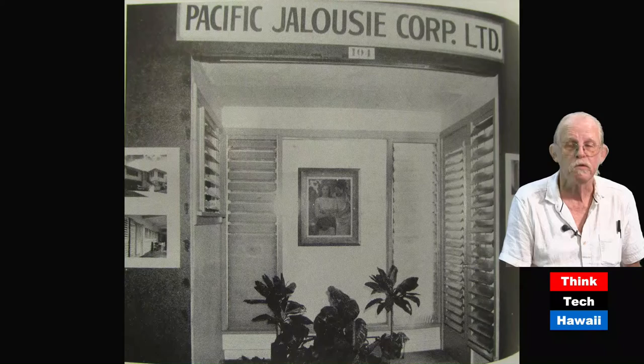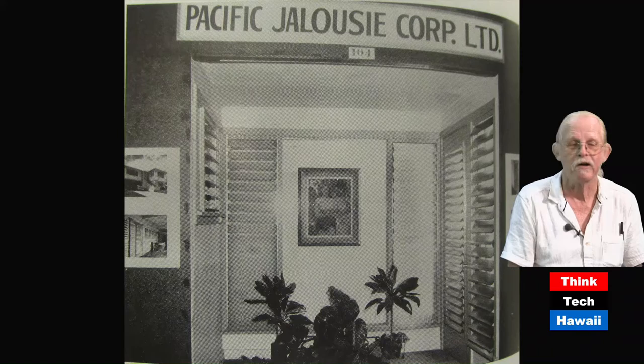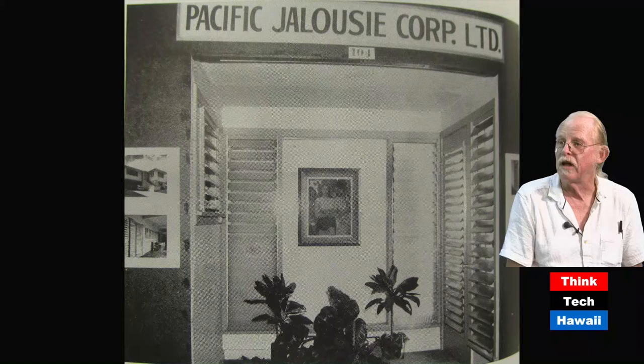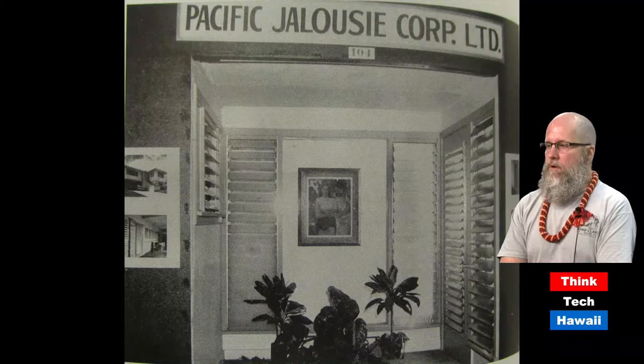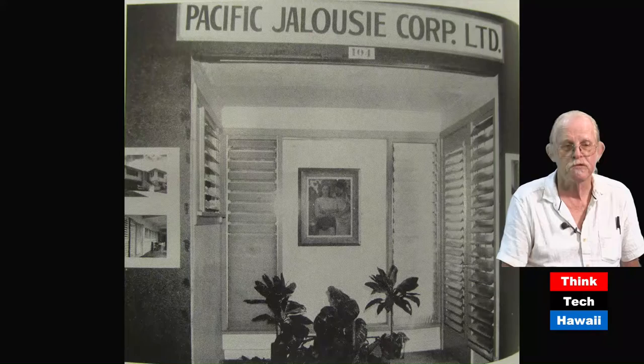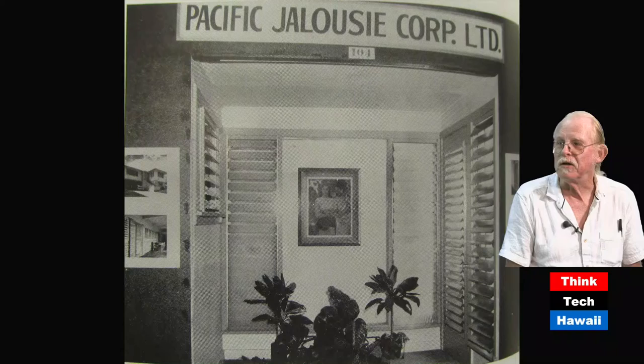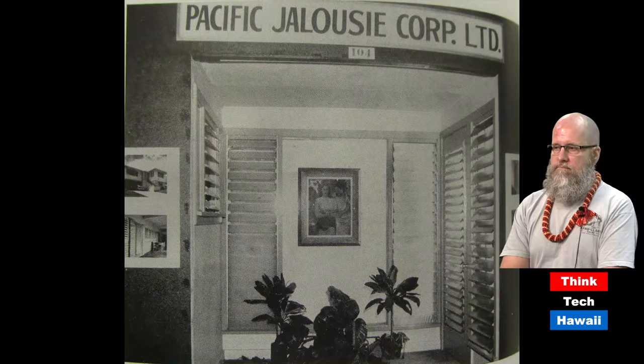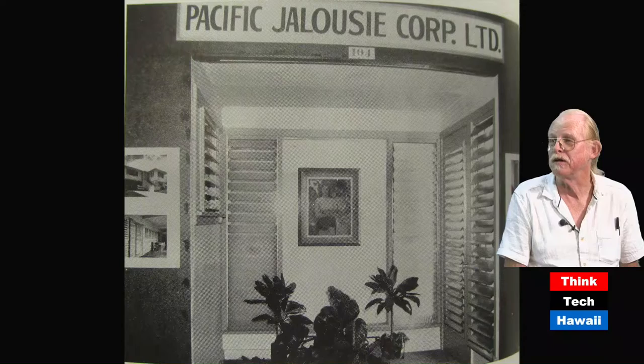Ho would put them in his house in Kaneohe — which I've yet to find — but that would be the first residential use of the jalousie in Hawaii, which then became all over the place. Much to Mr. Huff's disappointment, the jalousie was very easy to make and copy, so people infringed on his patent right and left. He did not have the money to fight them, so he essentially gave up, and in 1955 or '56, he quit and didn't make any more.